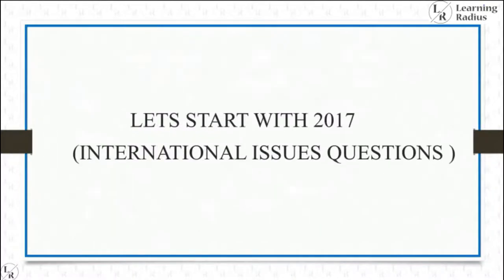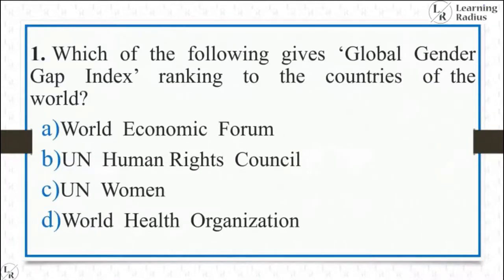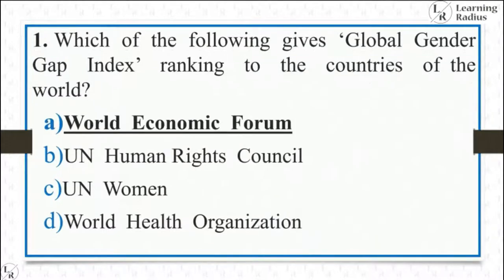The first 2017 international issues question: 'Which of the following gives the Global Gender Gap Index ranking to countries of the world?' — options were World Economic Forum, UN Human Rights Council, UN Women, World Health Organization. It's a very direct question; the answer is World Economic Forum.